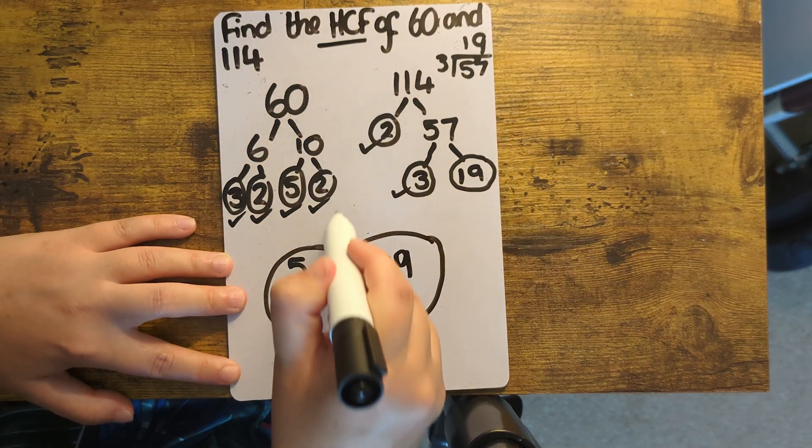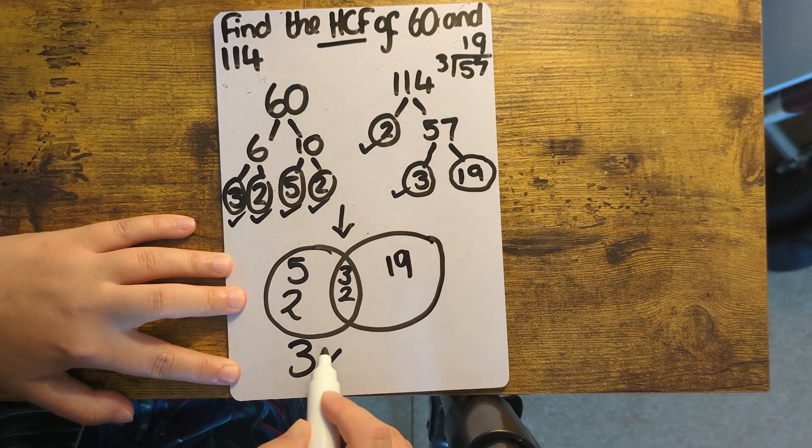The highest common factor, I just need the middle part of the circle, so 2 times 3 is 6.